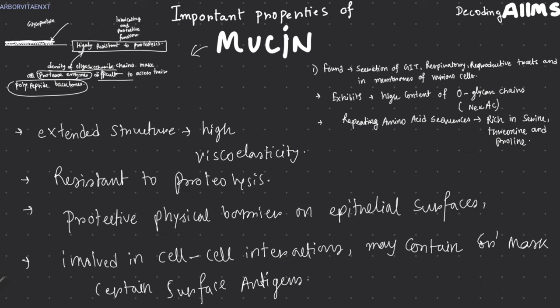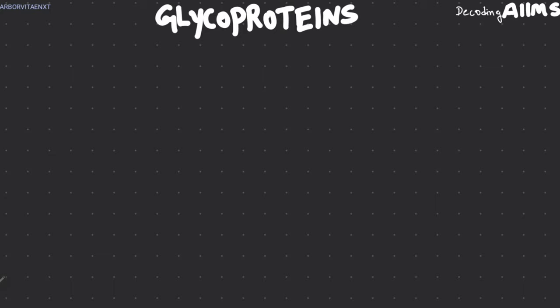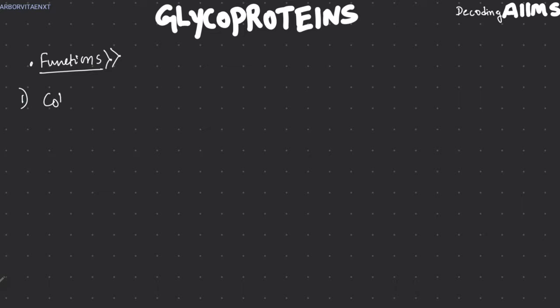Those are some very important points about mucin. In the next part we will discuss various glycoproteins and the functions served by them. There are various types of glycoproteins present in our body, and we are going to know some of the important ones according to their function.